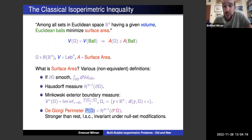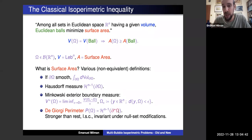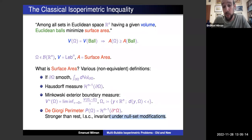The De Giorgi perimeter has various equivalent geometric and analytic definitions. With a geometric flavor, it equals the (n−1)-dimensional Hausdorff measure of not the topological boundary of Ω, but rather the so-called reduced boundary, denoted ∂*Ω. This is a subset — possibly strict — of the topological boundary, and is the collection of all points where Ω has a well-defined unique unit outer normal in a measure-theoretic sense. A key property is that it is invariant under null-set modifications of Ω.